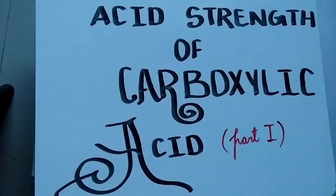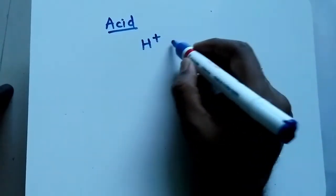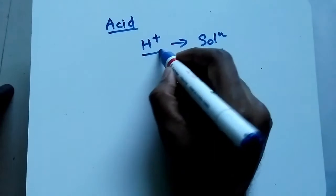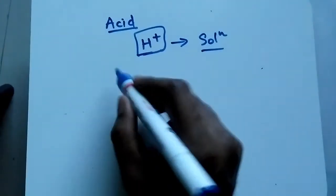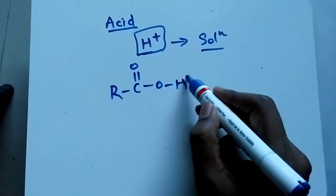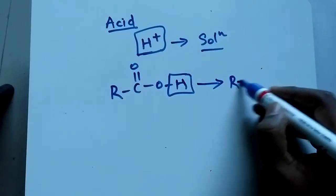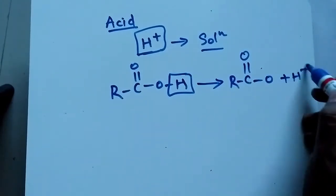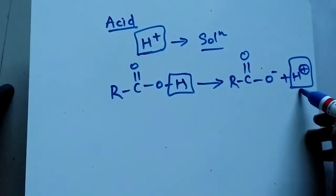Welcome to acid strength of carboxylic acid, part one. In this video we'll discuss the basics. Regarding acid, anything that gives H+ ion in solution is considered an acid. For carboxylic acid, we have the COOH group, and only this hydrogen can be given into the solution. If it gives H+ ion in the solution, this part makes it acidic.